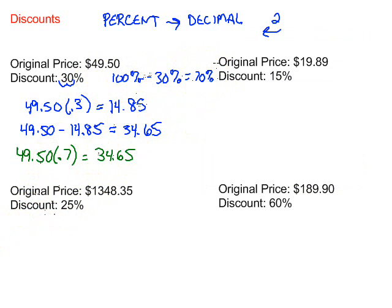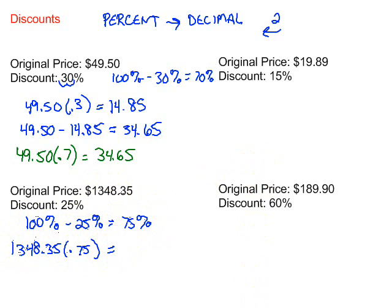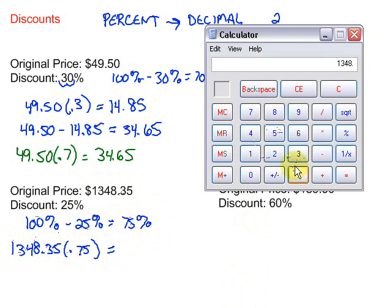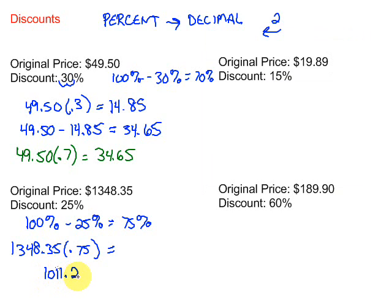If we have a discount of 25%, that means how much of the price are we paying? Well, there's 100% as the original price and we're taking off 25% of the price. That means we're going to pay 75% of the price. So we need to find 75% of this amount right here. So we're going to multiply 1348.35 times that 75% as a decimal, which would be 0.75, two spots to the left, remember. We'll go ahead and multiply that. 1348.35 times 0.75 gives us 1011.2625.